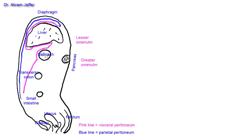The greater omentum is a double layer and is reflected backwards towards the transverse colon, passing around it as visceral peritoneum. It is then reflected from the transverse colon to the posterior abdominal wall where it reaches the pancreas — this reflection is called the transverse mesocolon. The pancreas is a retroperitoneal structure; it has no mesentery, unlike the transverse colon which has mesentery.